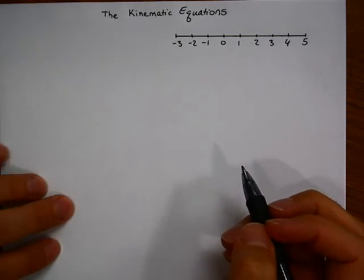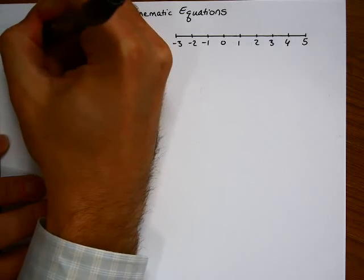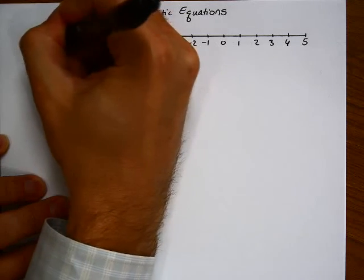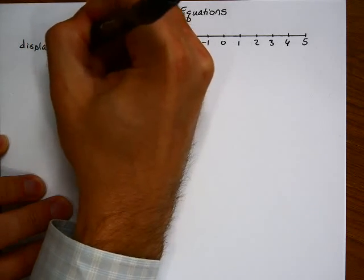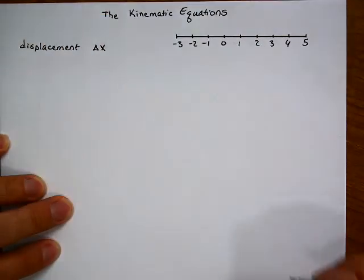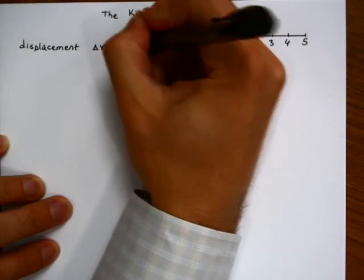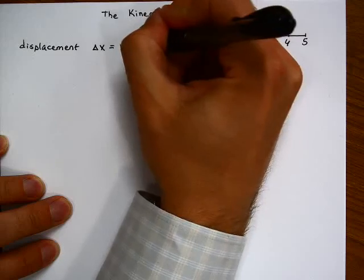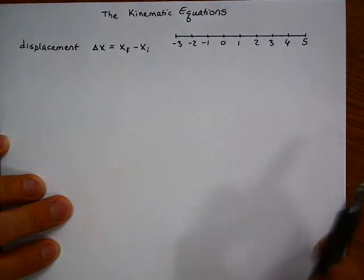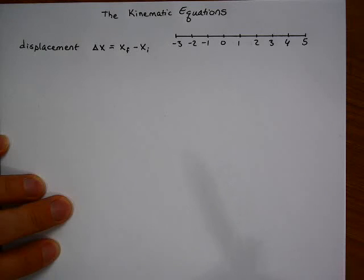We begin with a few definitions. Displacement, often written as delta x, is defined as your final x value minus your initial x value. The f and i are subscripts standing for final and initial.